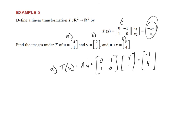And then for b, we want T of v. So we're going to multiply a times v, which is 0, negative 1, 1, 0, times my vector v, which is 2, 3. And if you do that, you should get negative 3, 2.